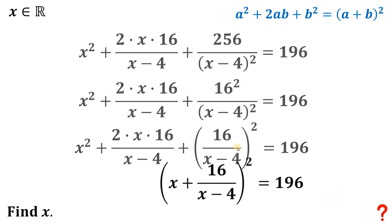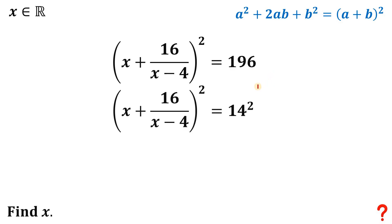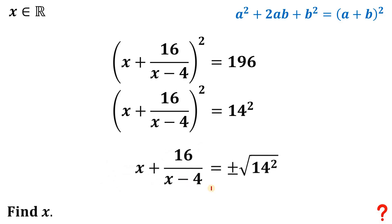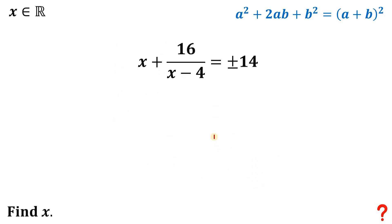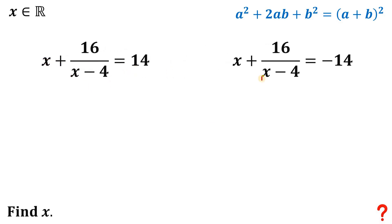Now, 196 is also a perfect square — it's 14 raised to the power of 2. So we can take the square root on both sides. There are two possible values: positive or negative square root of 14 squared. The left-hand side is x plus 16 over (x minus 4), and the right-hand side is positive or negative 14. This gives us two cases: x plus 16 over (x minus 4) equals positive 14, and the second case equals negative 14.